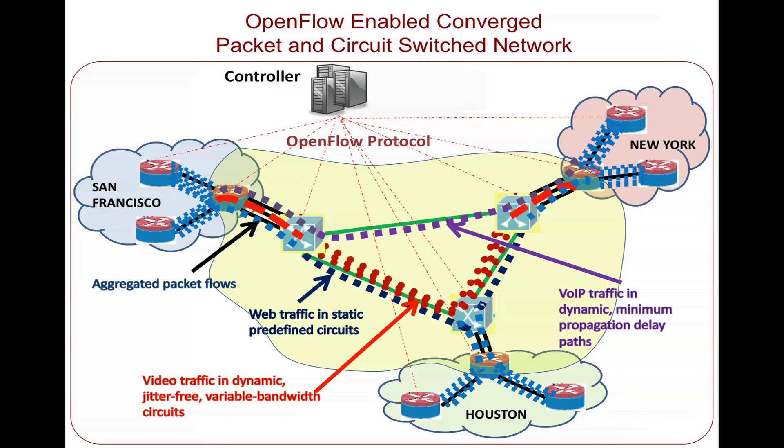These and many more new capabilities become possible in an OpenFlow-enabled converged packet circuit network. The OpenFlow-based architecture allows us and others to experiment with new ideas. It could help the service providers use their infrastructure more efficiently while introducing new revenue-generating services.